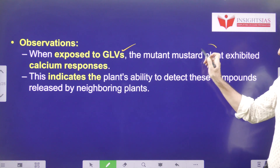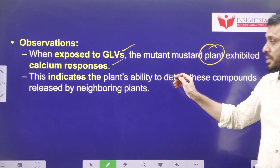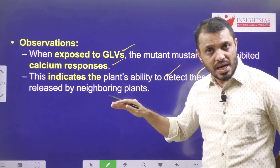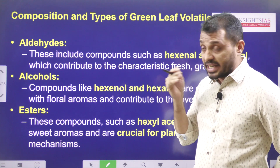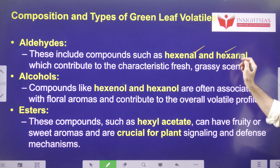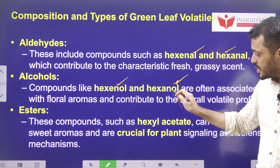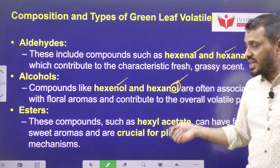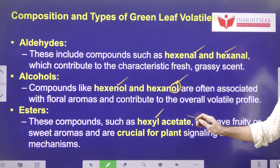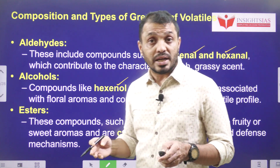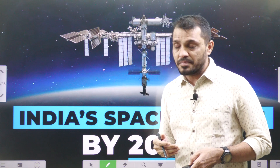When scientists exposed green leaf volatiles to genetically modified mustard, the mustard experienced high levels of calcium, indicating the plant's ability to detect and respond to these volatiles. Types of green leaf volatiles include aldehydes such as hexenal, alcohols such as hexenol — compounds ending in '-al' are aldehydes and those ending in '-ol' are alcohols — and esters such as hexenyl acetate. These chemicals help plants communicate and defend against dangers.